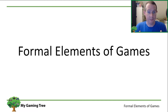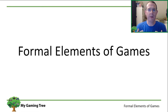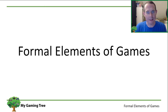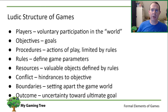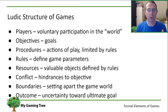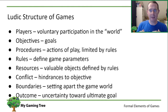So what do we mean by the formal elements of games? When I was breaking down Mario 1-1 in the previous video, I was looking at each action the player took and what the designer was trying to communicate about the rules. We can actually go deeper than that by breaking it into eight categories: players, objectives, procedures, rules, resources, conflict, boundaries, and outcome.